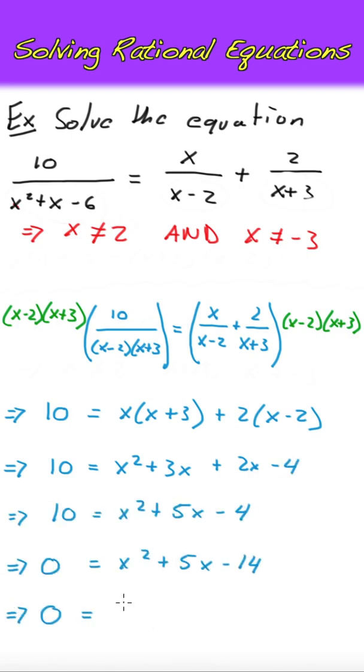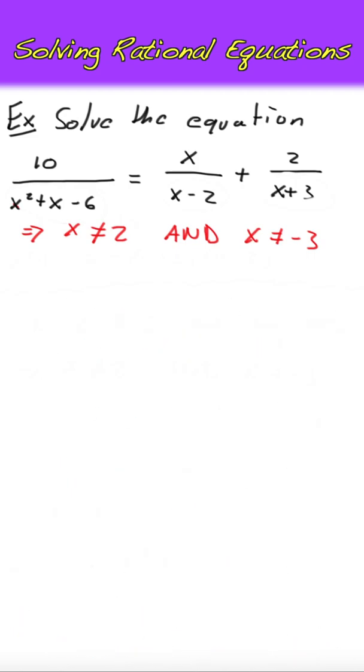Next, solving the quadratic by factoring gives solutions of negative 7 and 2. However, we can't stop here.